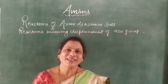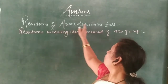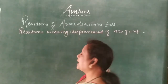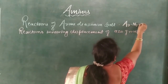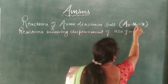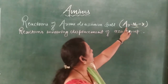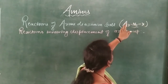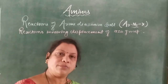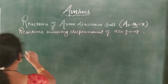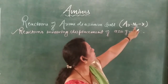Hi students, good morning. In this video we are going to study the reactions of aryl diazonium salt. Here aryl diazonium salt means Ar-N2-X, where N2 is diazonium, Ar means aryl, and X is a halide. So it is also called as aryl diazonium halide or aryl diazonium salt. In this video we will discuss only the reactions involving displacement of this azo group.